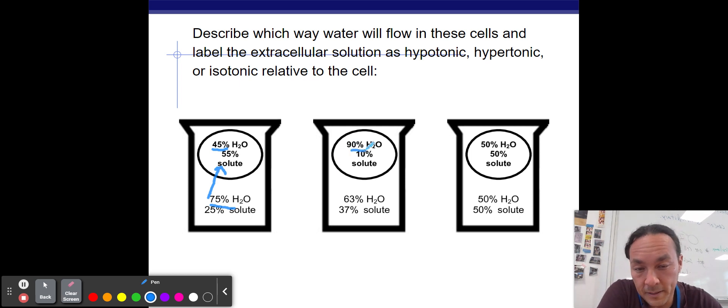Here we can see this would be our egg placed in syrup. The egg might be 90% water, 10% solutes. And then syrup might be 63% water, 37% solutes. Where will the water go? From high to low. So it's going to leave the egg. As it leaves the egg, it's going to shrink. A solution that causes the shrinking of a cell is called hypertonic.